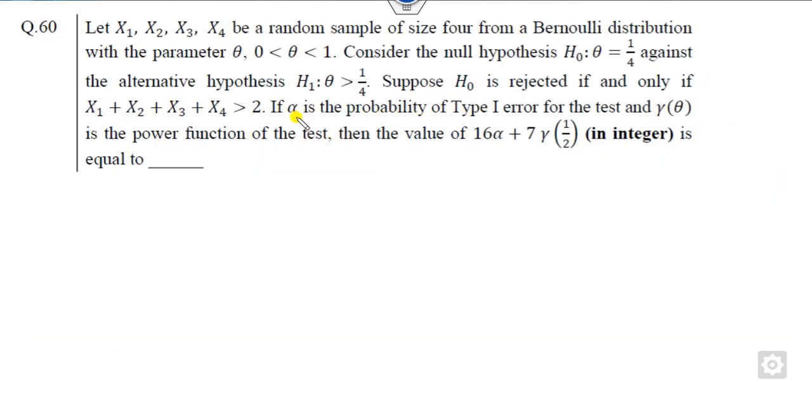What is that? Your target is to find the value of 16α + 7γ, where α is my Type 1 error. So let me tell you what Type 1 error is.